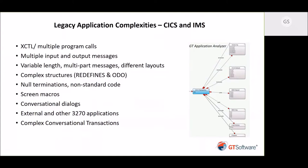Then there's the issue of null terminations. What we found at one IMS site is that the data could have a 0x00 or a 0x3F. MFS puts the 3F in to end the data, but there's more data behind it. In the ASCII world or the Java world, they don't understand what that is — it just cuts off the data even though there may be data you want to use past that. Screen macros: BMS maps allow you to have screen macros. How would you handle them in an API? What we found is that screen macros had zero-filled fields, and when we created the APIs we didn't know that, didn't fill those fields with zeros, and therefore the API failed.